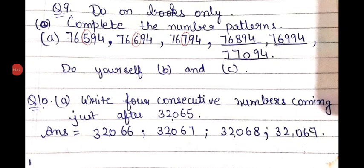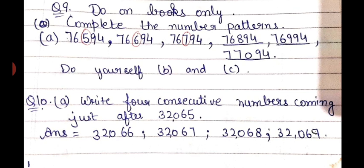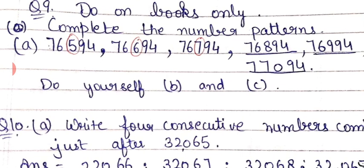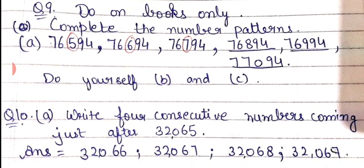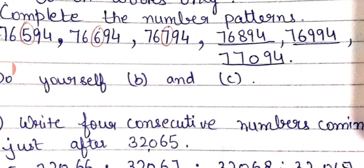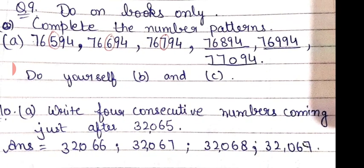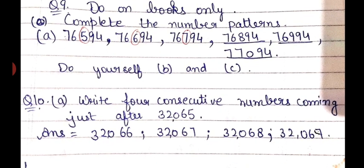Question number 9, complete the number pattern — you will do this in your books. First observe the pattern. The numbers given are 76,594 — 76,694 — 76,794. The digits 5, 6, 7 are changing in the hundreds place, so the pattern is adding 100. The next numbers are 76,894, 76,994, and 77,094. You will observe the B and C patterns and do them yourself.